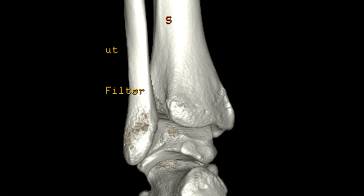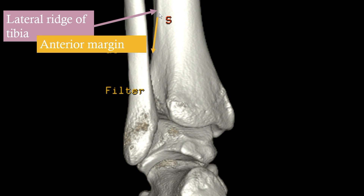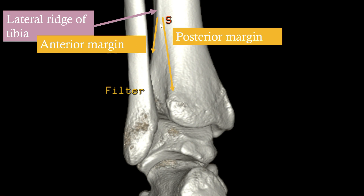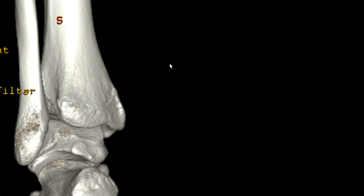This is a view from the posterior of the ankle joint, and we have some bony landmarks to go through first. This is the lateral ridge of the tibia, and it separates into an anterior margin and a posterior margin. In between, it forms a concave groove known as the incisura fibularis, and basically the fibula lies in this groove and is stabilized by these bony landmarks.